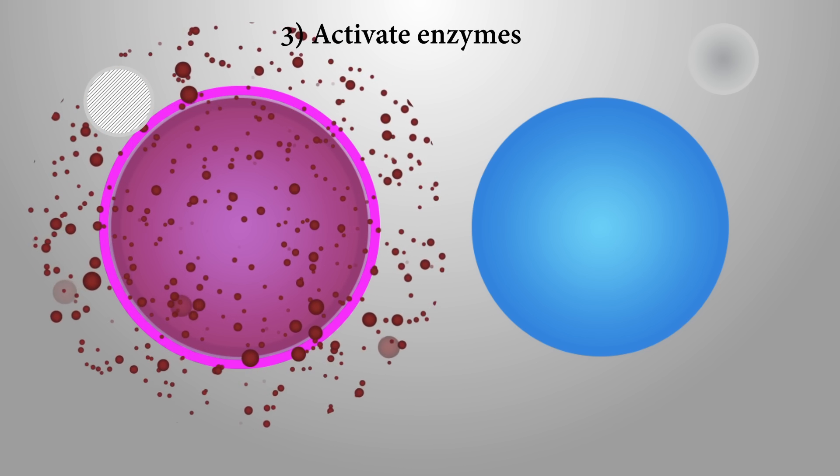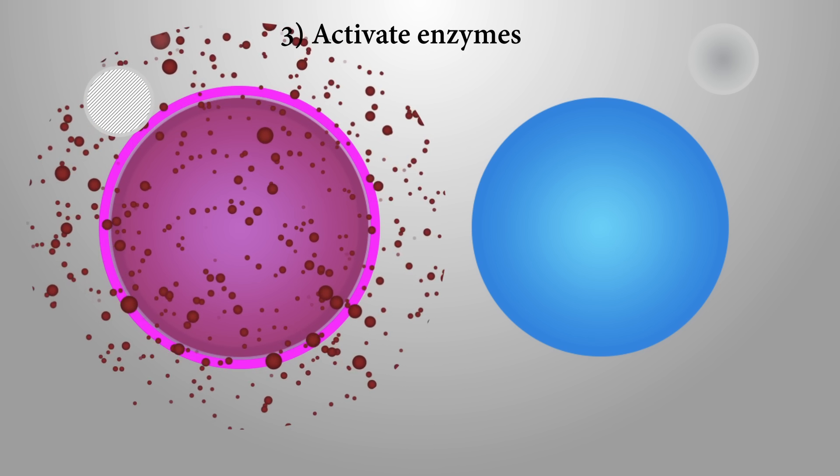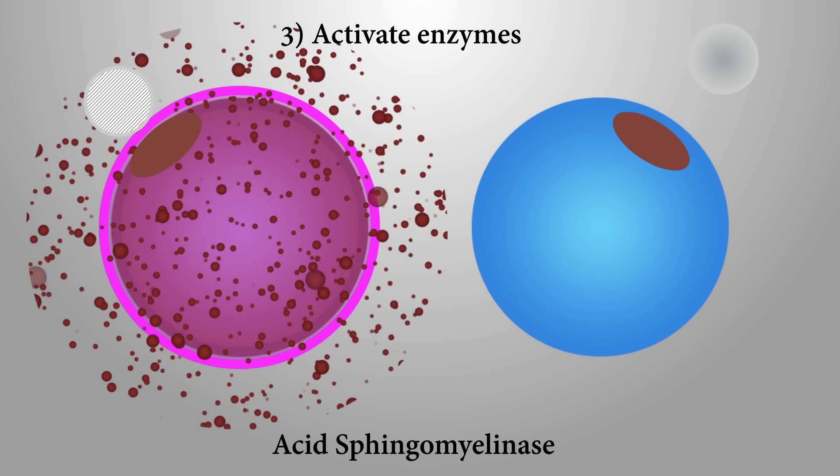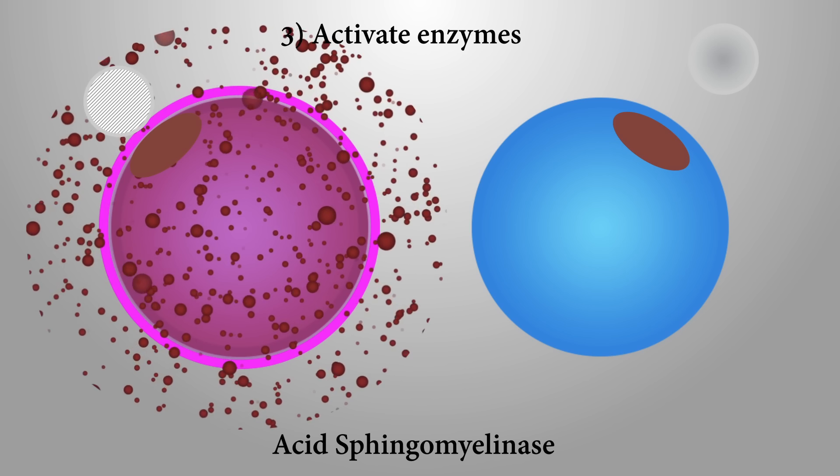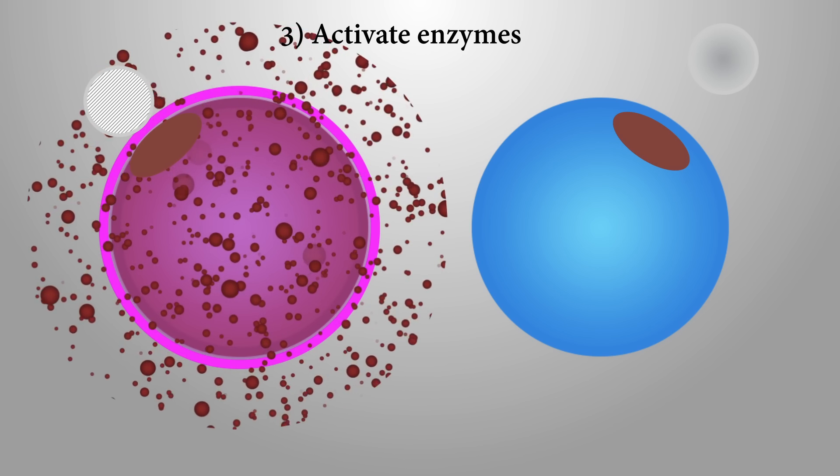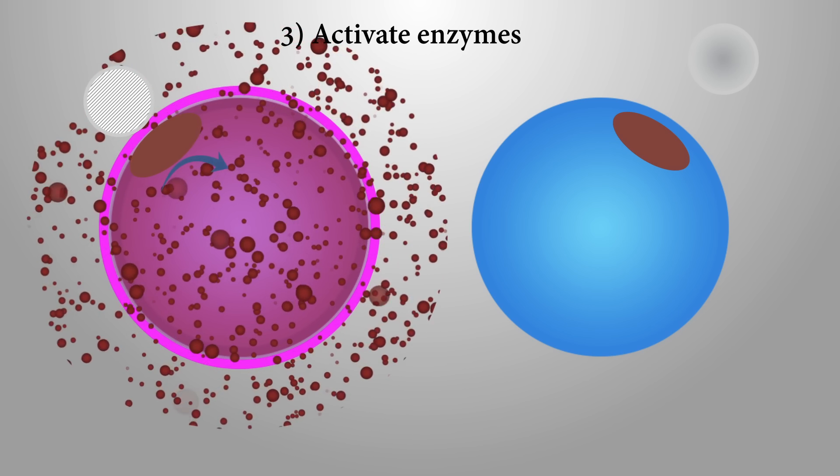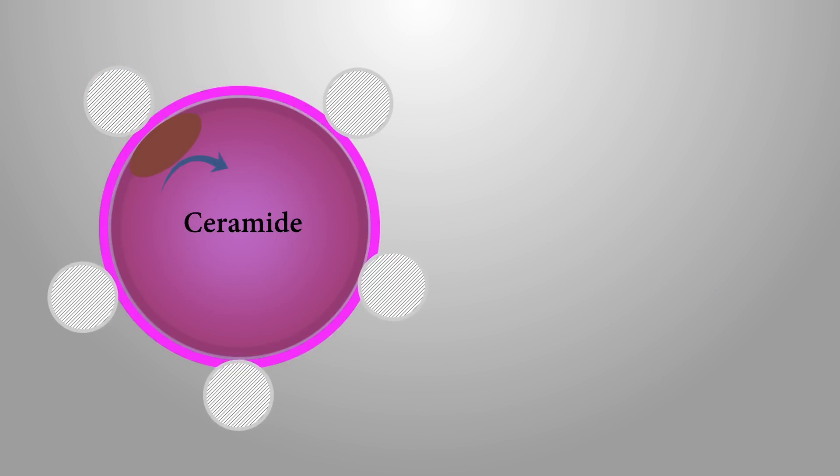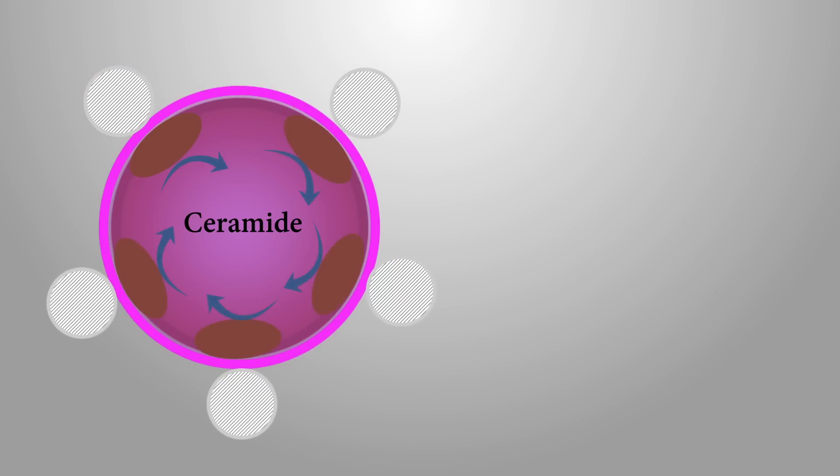Third, after saposin C attaches to the protective coating, it activates a specific enzyme called acid sphingomyelinase, which is normally found within the cell wall. When this enzyme is activated, a lipid called ceramide is produced. When high amounts of ceramide are produced, the suicide signal is turned on and the cell will die.